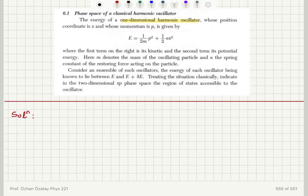Consider an ensemble of such oscillators, the energy of each oscillator being known to lie between E and E plus delta E. Treating the situation classically, indicate in the two-dimensional xp phase space the region of states accessible to the oscillator.